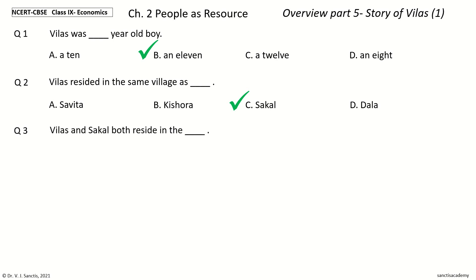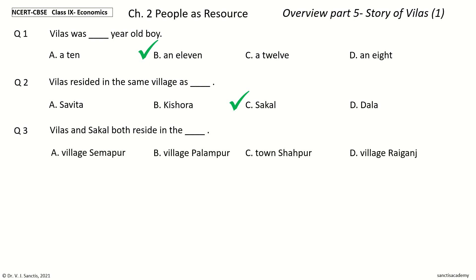Question 3: Vilas and Sakal both reside in the dash. The options are: a) Village Semapur, b) Village Palampur, c) Town Shahapur, d) Village Raiganj. And the answer is Village Semapur. So Vilas and Sakal both reside in Village Semapur.